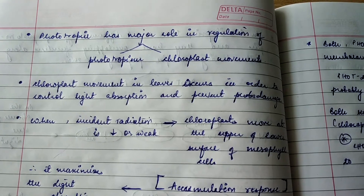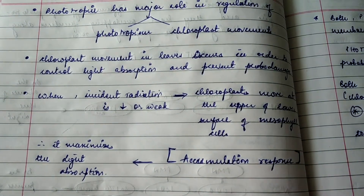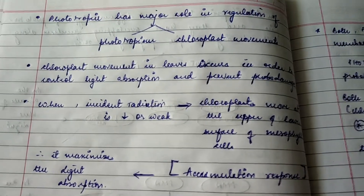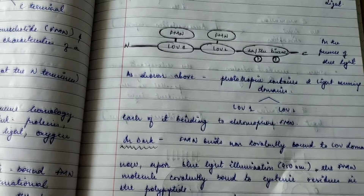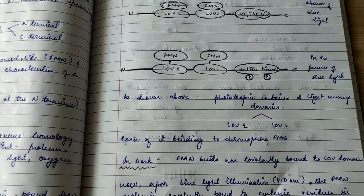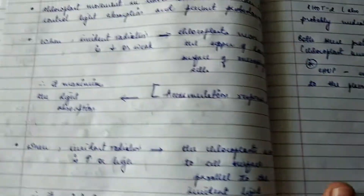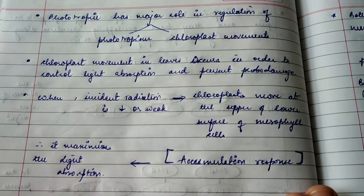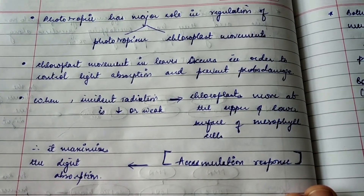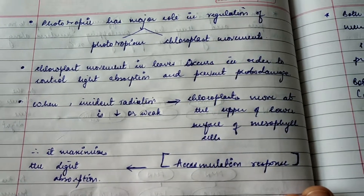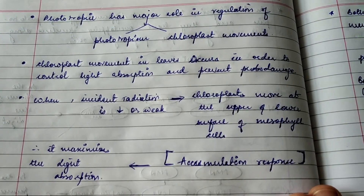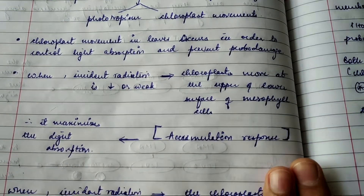Phototropin has a major role in the regulation of phototropism and chloroplast movements. Chloroplast movement in leaves occurs in order to control light absorption and prevent photo damage. So beyond autophosphorylation, phototropins also regulate chloroplast movement - which controls how much light is absorbed and protects against photo damage.